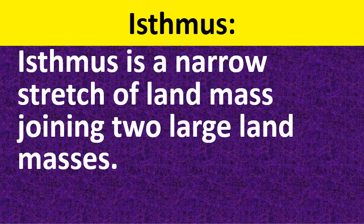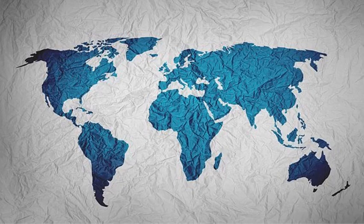Isthmus is a narrow stretch of landmass joining two large landmasses. You can find an example in the American continent, where a narrow stretch of land connects North America and South America.